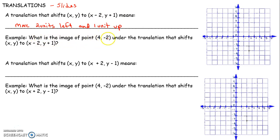What is the image of (4, -2) under the translation that takes x, y to x minus 2, y plus 1? I'm going to shift it 2 left and 1 up. So (4, -2) under that translation becomes (2, -1).